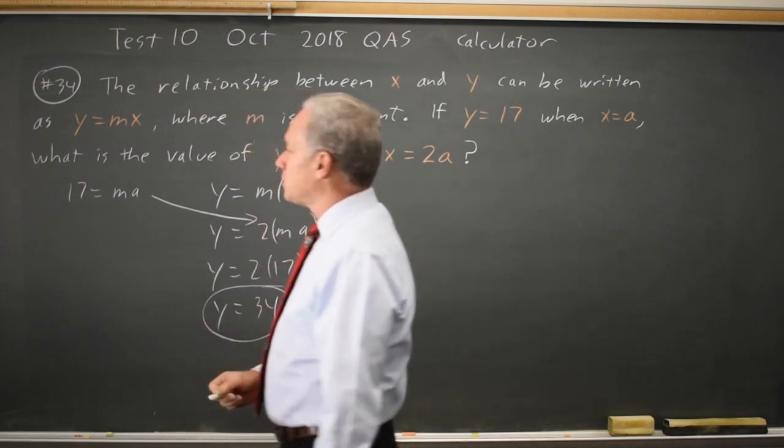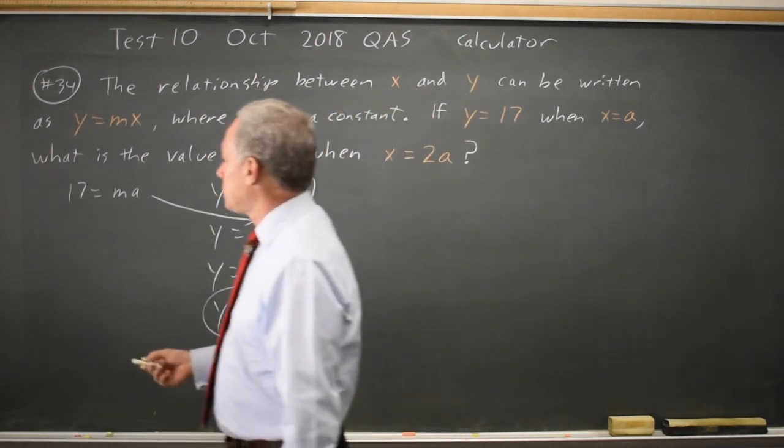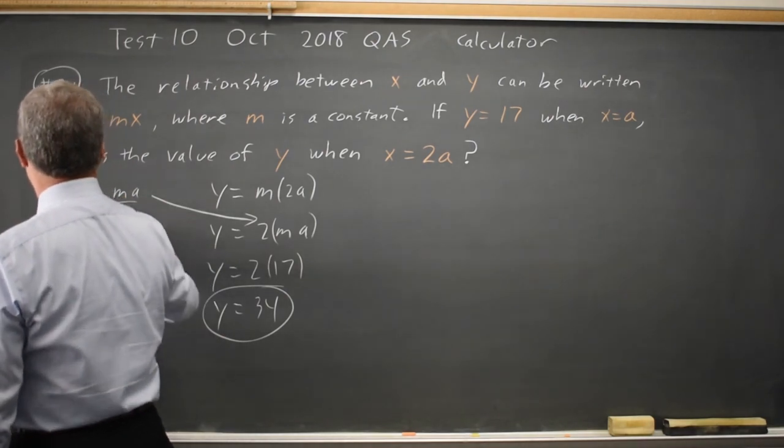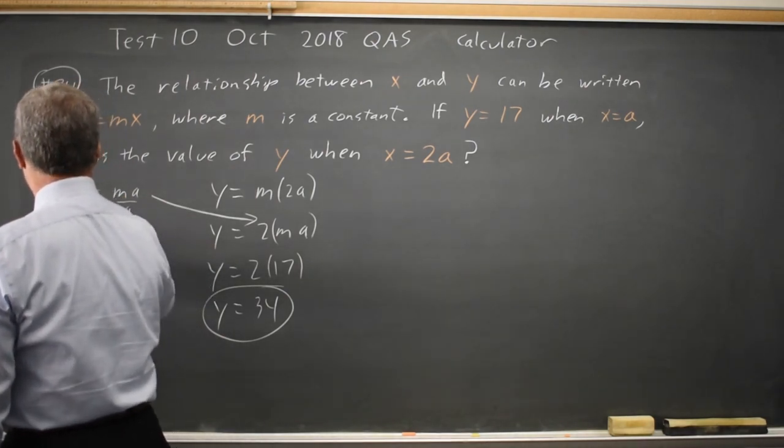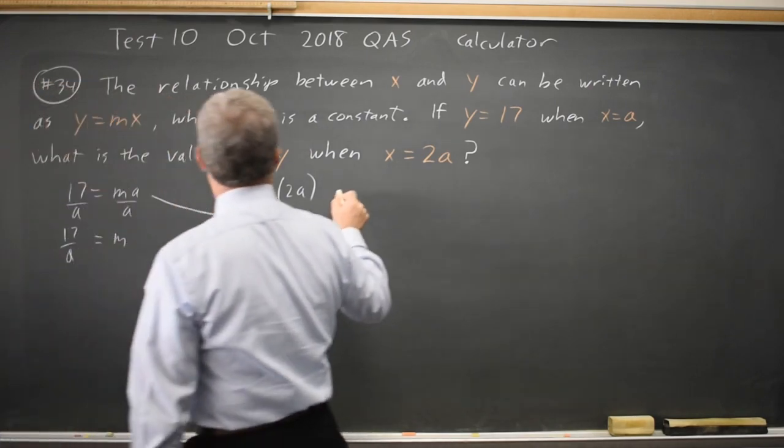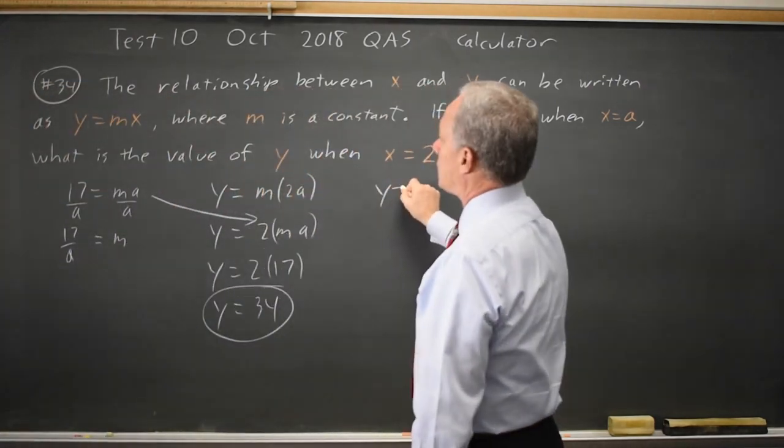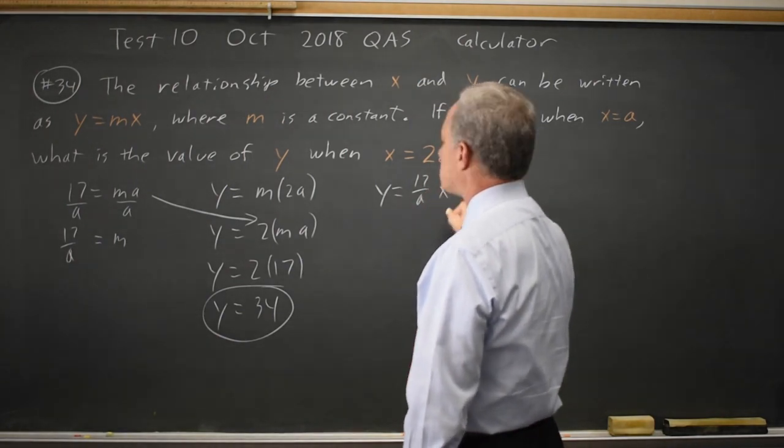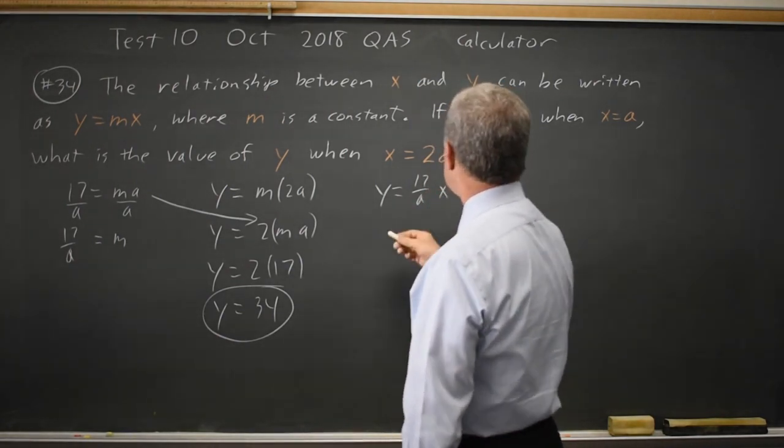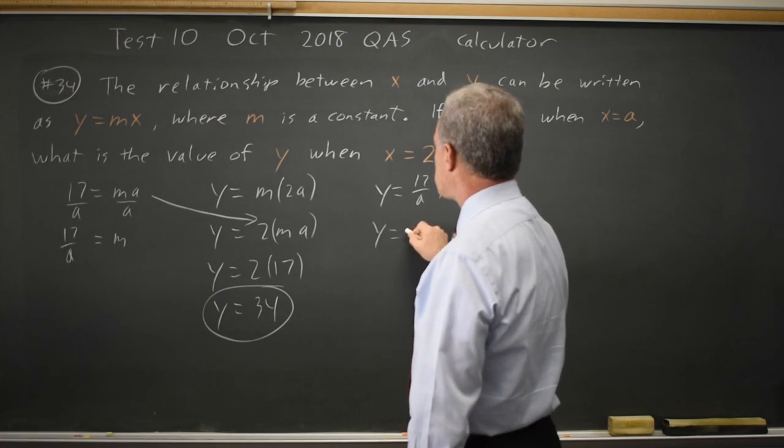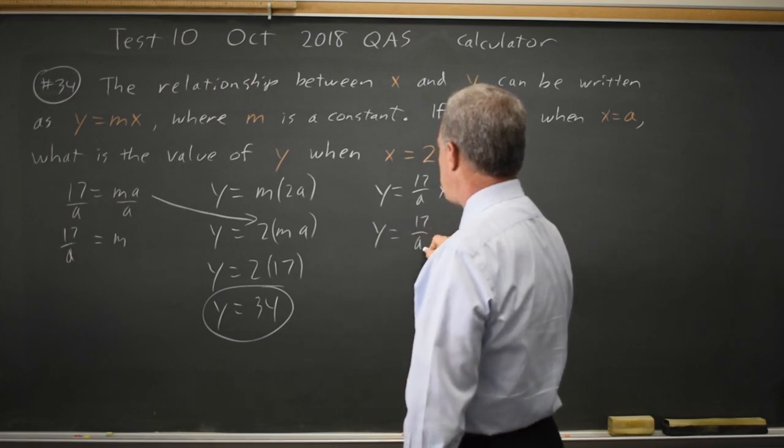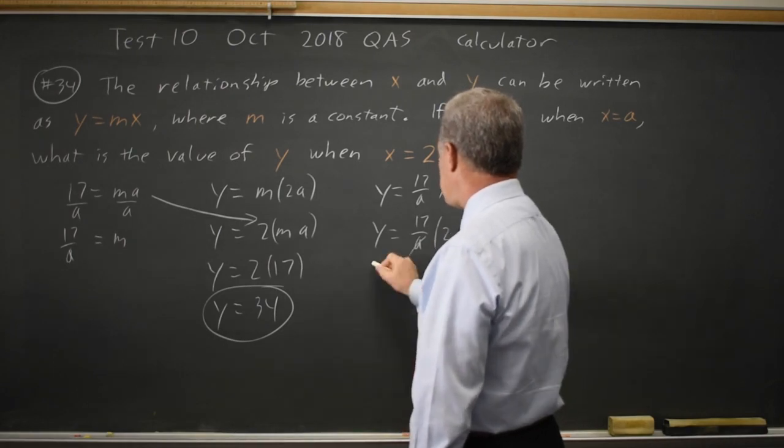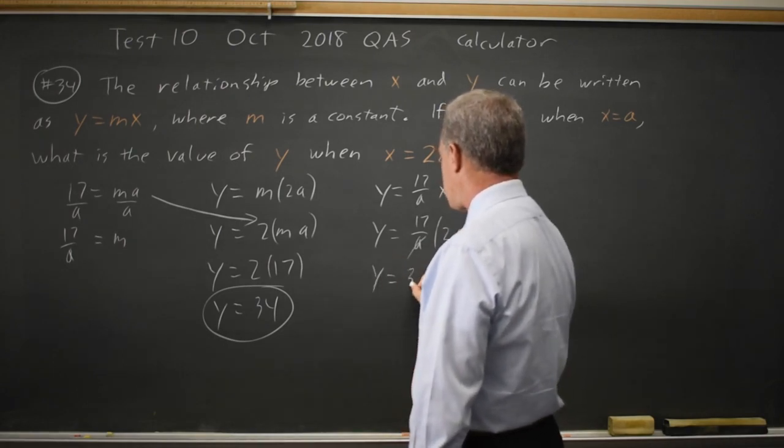I could also have solved for m. m equals 17 over a, and then my equation y equals mx is y equals 17 over a times x. When x is 2a, that's y equals 17 over a times 2a. So 2a, a over a cancels, so y equals 17 times 2 is 34 again.